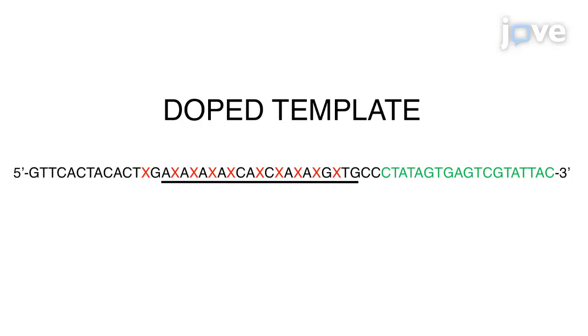Use a ratio of 90% wild type nucleotide to 10% non-wild type nucleotide for each site of doping. The sequence in green is complementary to the T7 primer sequence and is the T7 promoter for in vitro transcription.